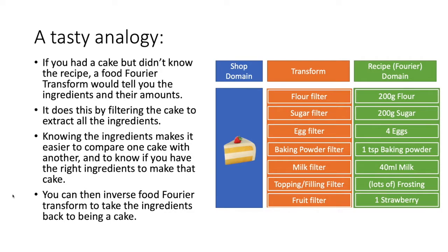So why would that be useful? Well knowing the ingredients of your cake makes it easier to compare with another cake, so you would know the difference because there would be some different ingredients in there, and it also lets you know if you have the right ingredients to make a cake in the first place. We can also do the inverse which would take our ingredients and transform them back into a cake, so that would be the Fourier baking transform I guess.